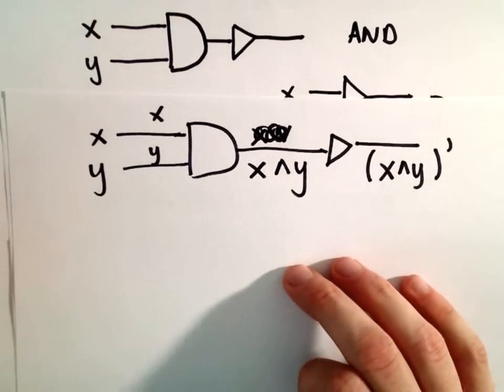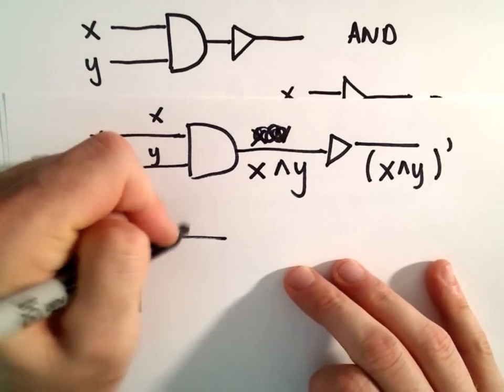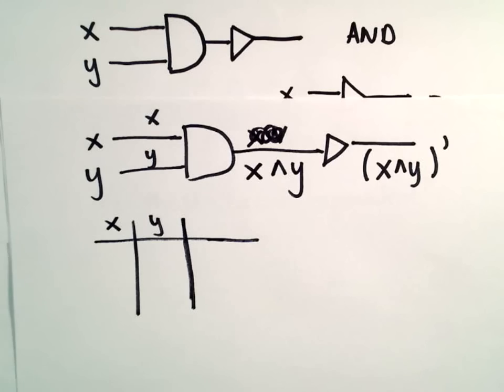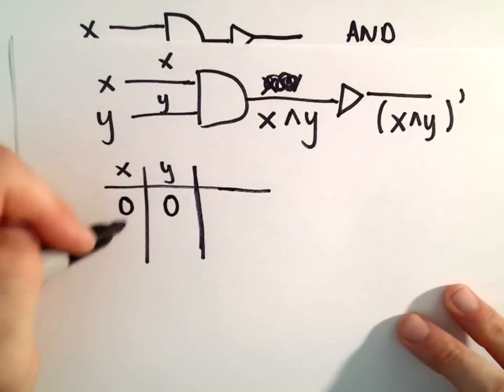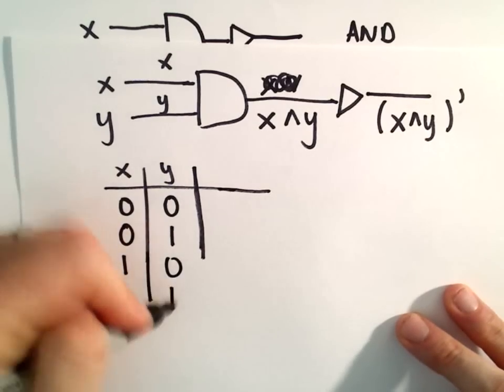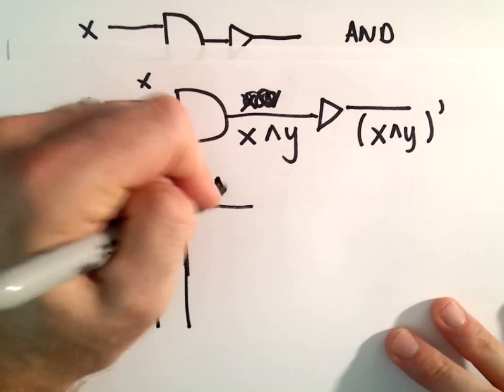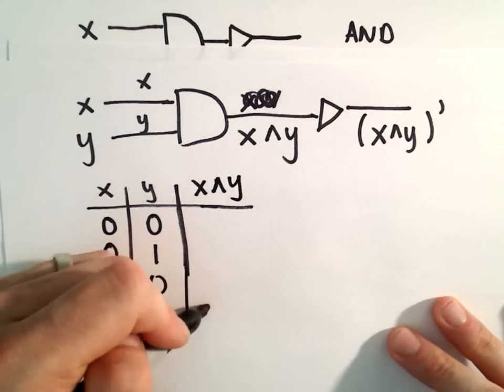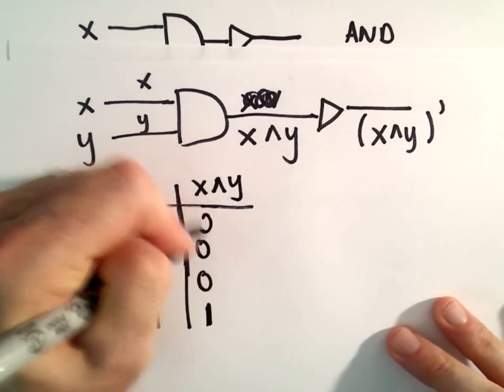Let's create the truth table for that. We've got our inputs for x and y: 0,0; 0,1; 1,0; and 1,1. The value for x and y equals 1 if only both are equal to 1. So we'll get a 1 in the last row and 0s everywhere else.